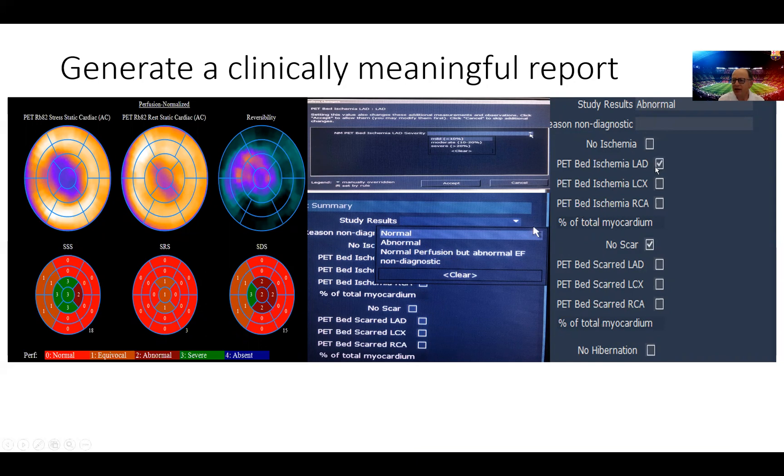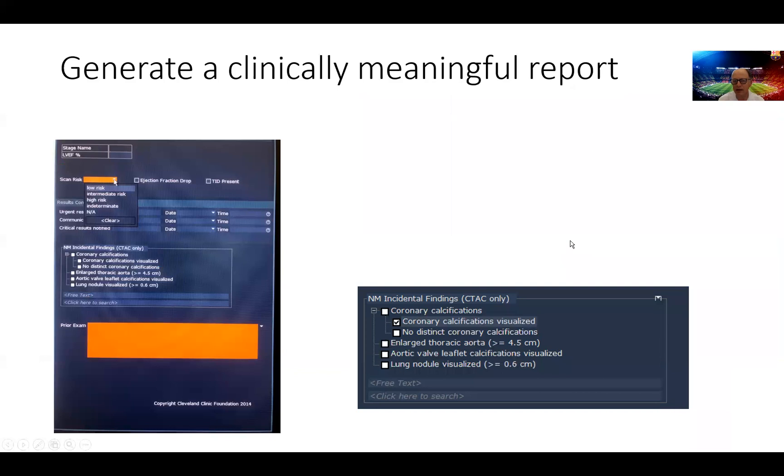The area, the bed of ischemia is the LAD. We can have a choice here between mild, moderate and severe depending on the size of the defect and where it was. We interpret the study as no scar but again because we did not have FDG to ascertain the presence of scar. But we interpreted ischemia in the distribution of the left anterior descending artery.